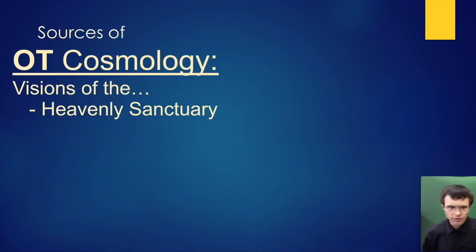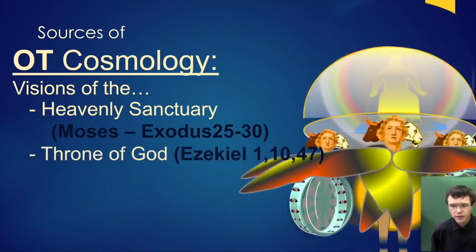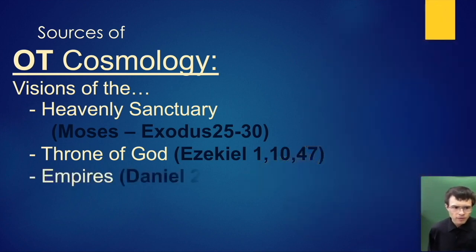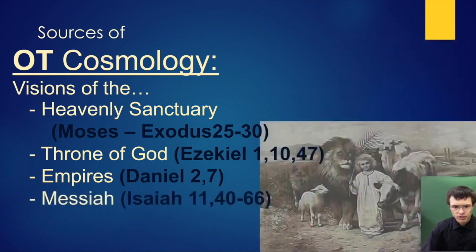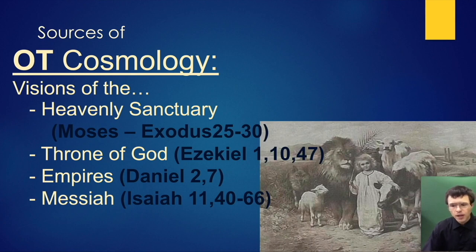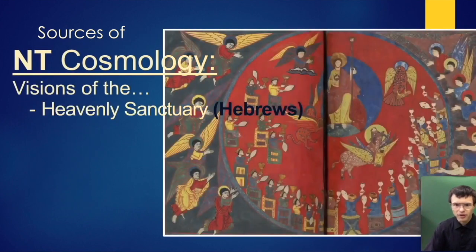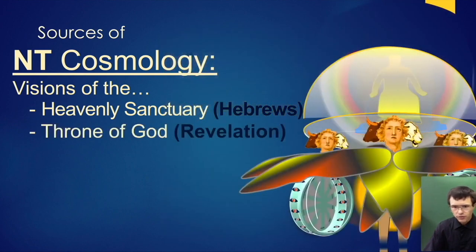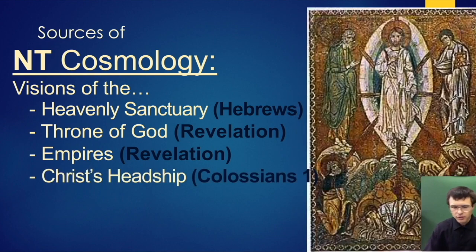First, it comes from Old Testament cosmology, especially visions of the heavenly sanctuary by Moses, also of the throne of God in Ezekiel carried about on top of the cherubim, also of the empires in Daniel, and greatly of the Messiah motifs in the last half of Isaiah as well as Isaiah 11. Of course, these are just the major sources. There are many others in addition to these.